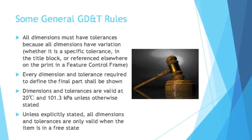Here are some general GD&T rules — there are a lot more than this, but these give you an idea of what GD&T specifies. All dimensions must have tolerances, because all dimensions have variation, and everything in this world varies. Whether it is a specific tolerance for the actual dimension, or the title block specifies a default tolerance for all dimensions without a specific one, or the dimension can have a tolerance referenced elsewhere on the print in something called a feature control frame, which is like a really technical GD&T callout, usually with datums.